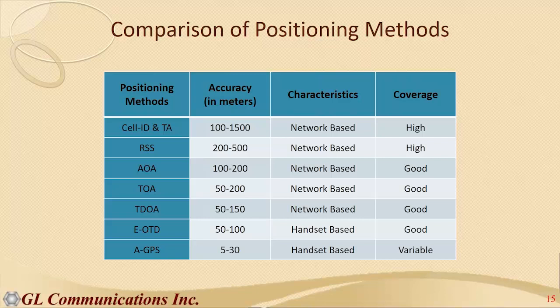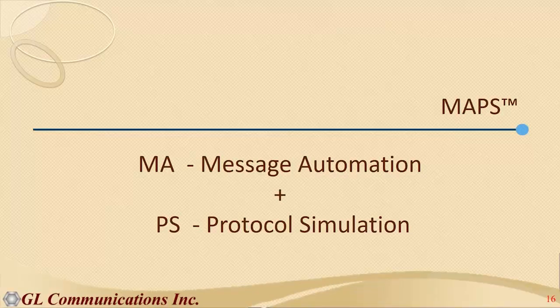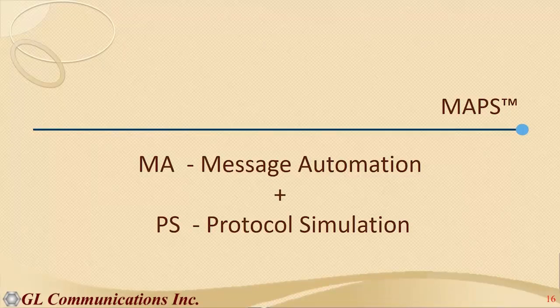An accuracy chart summarizes these methods, starting from the least accurate at the top — such as Cell ID — down to GPS at the bottom. The chart also indicates whether each method is network-based or handset-based, and shows the coverage range for each method.